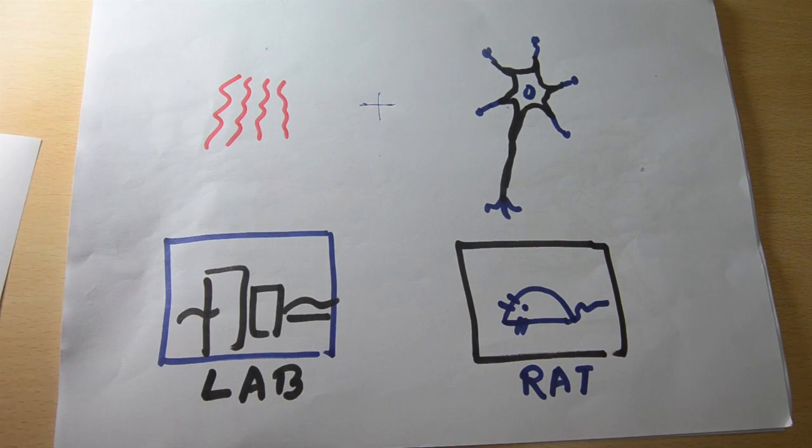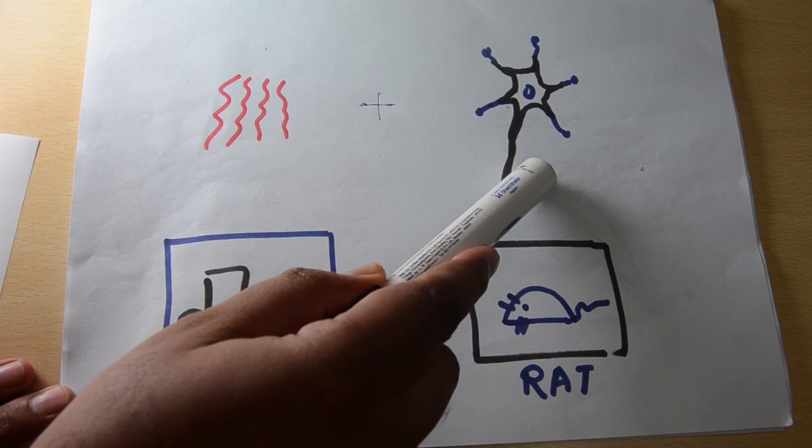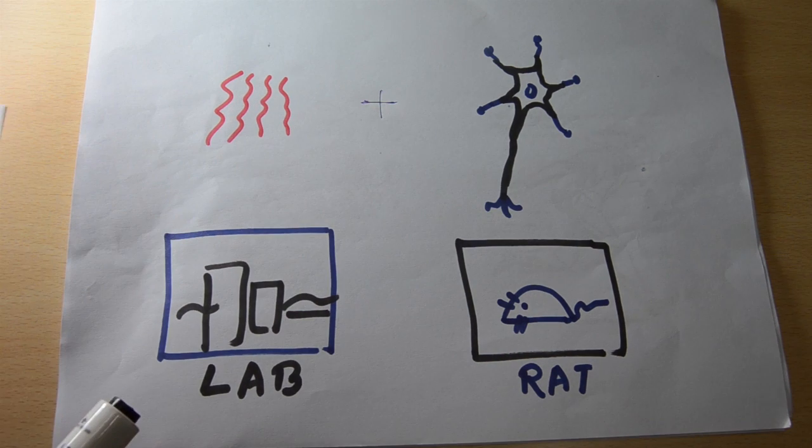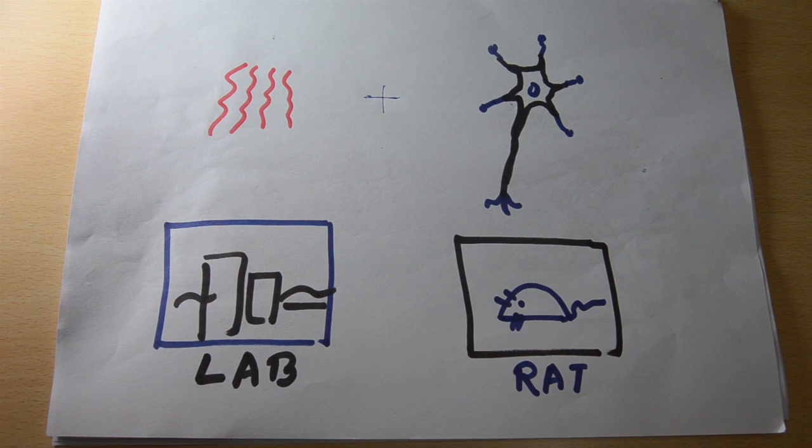In order to study this, we need amyloid beta peptide and the brain cells. We synthesize the peptide in our laboratory and obtain brain cells from rat. Earlier, I told you that single guys are cool guys.